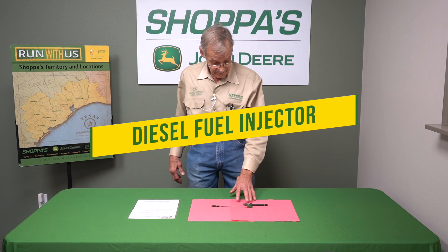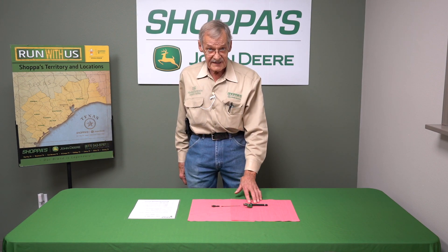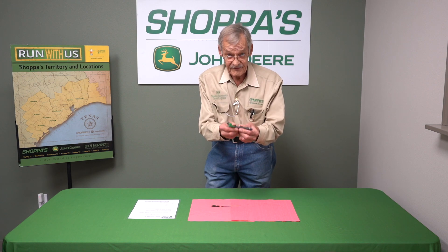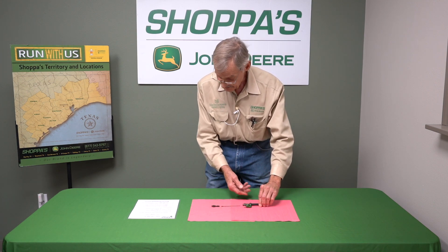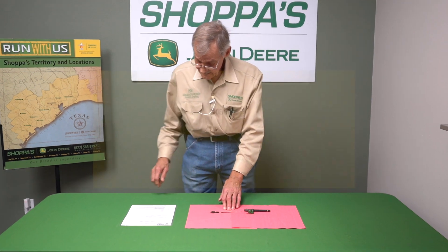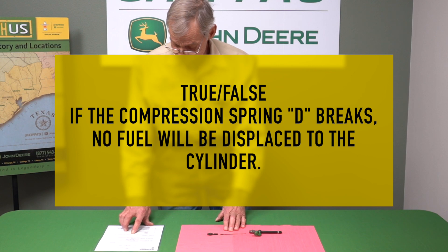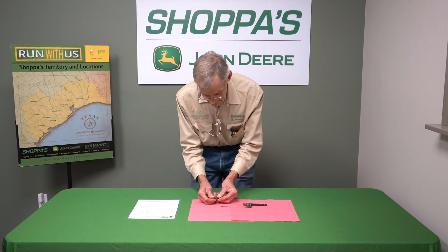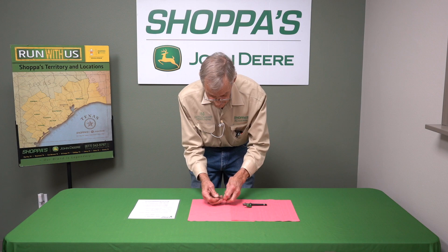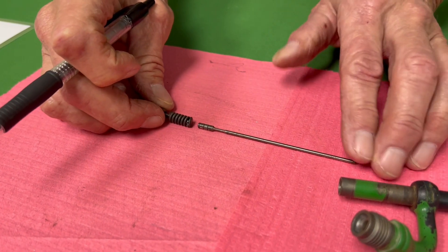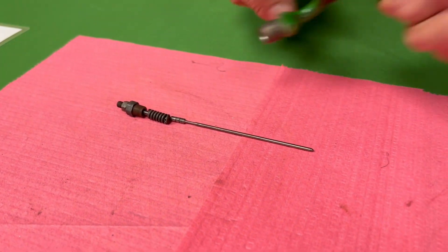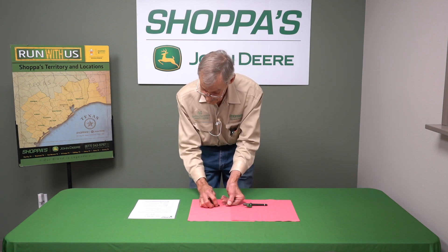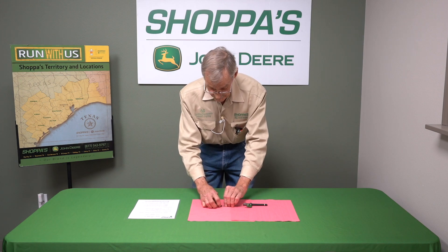Our next component is very common, especially on the older diesel engines. This is described as a pencil injector, for the simple reason it's somewhat the size of a number two pencil. The first statement: if the compression spring D breaks, no fuel will be displaced to the cylinder. This is a compression spring. If that were to break, it's not going to apply enough pressure to keep that plunger seated, and that's going to allow the plunger to float up, allowing fuel to be discharged into the cylinder all the time. So that's false.